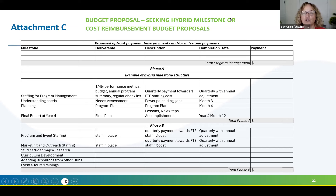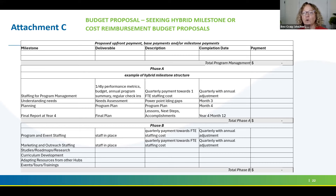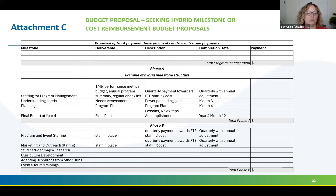Similarly, in Phase 2, which is more the implementation section, you could have base programming, event staffing, and marketing and outreach staffing with quarterly or monthly payments, plus additional more deliverable-based things like roadmaps, studies, curriculum development, adapting resources, specific events, tours, and trainings.